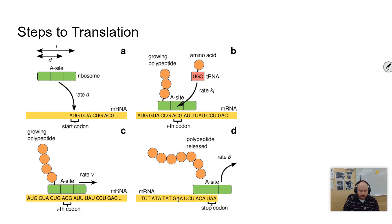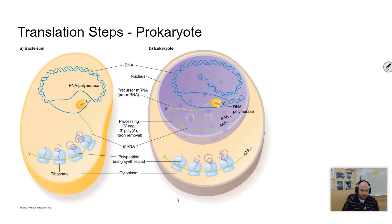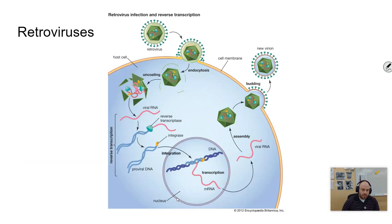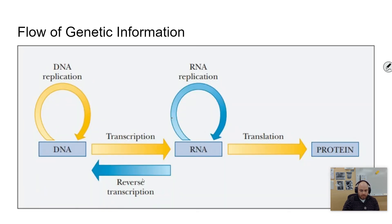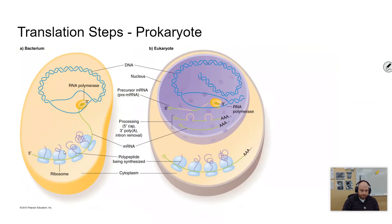In prokaryotes, this is happening at the same time that transcription is occurring. But in eukaryotes, that RNA has to actually leave the nucleus and then is translated outside the nucleus. I'll take you back to this picture real quick, because perhaps something that you saw on here that I hadn't mentioned yet is this idea of reverse transcription, going from an RNA to a DNA.